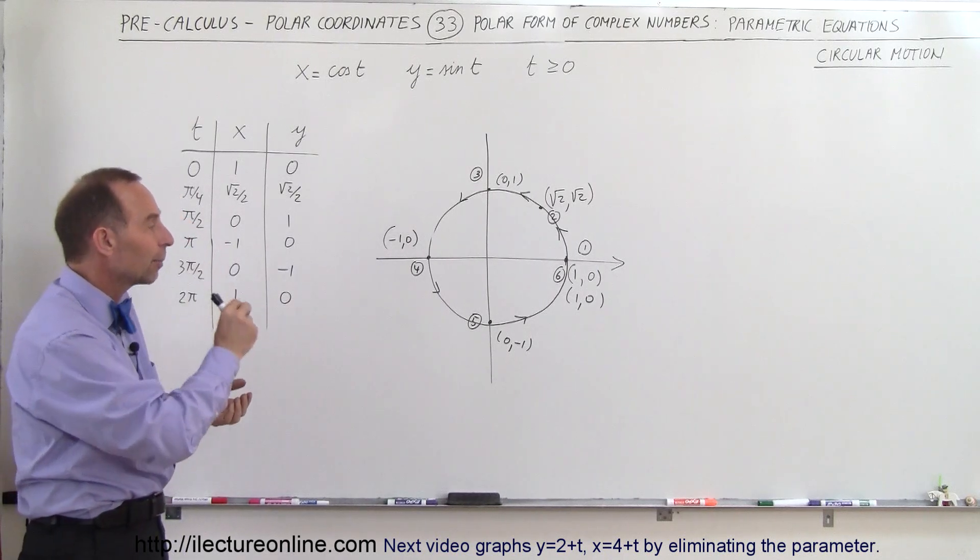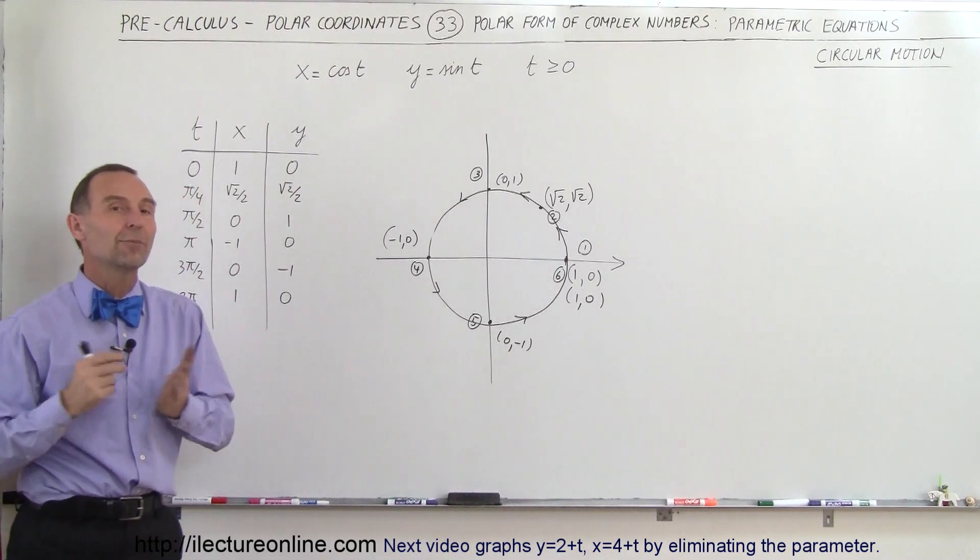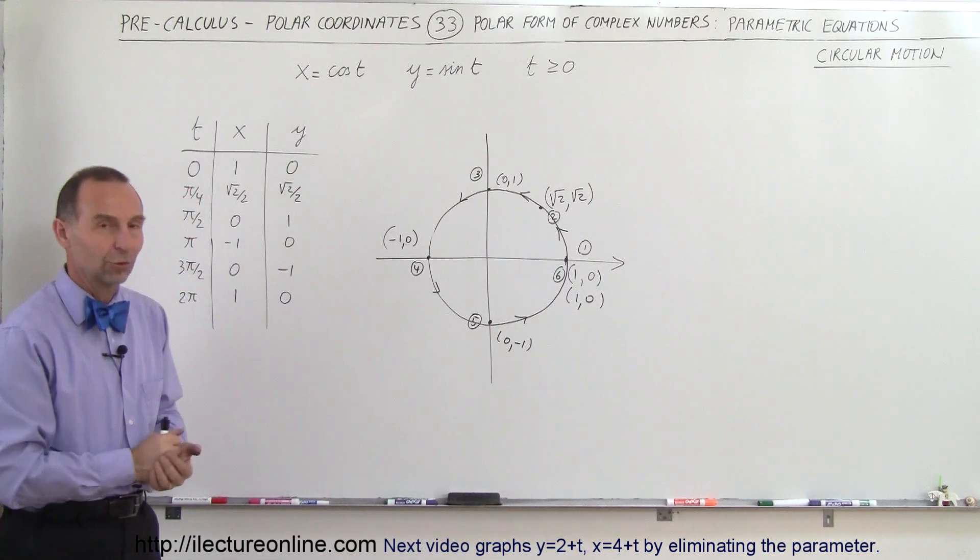That's why we call this circular motion instead of simply a circle. We can see that as time goes by, the particle will be in different positions along that circular path. That is how we use parametric equations for circular motion.